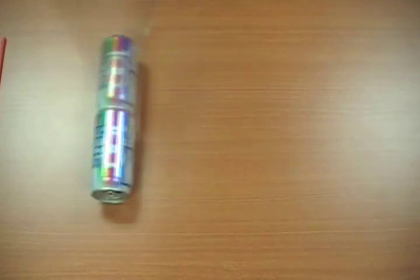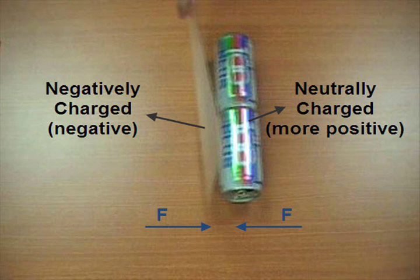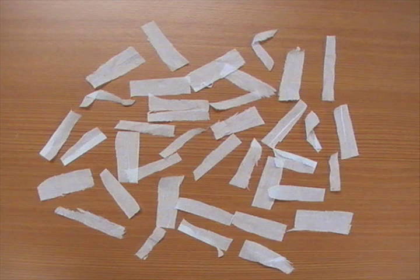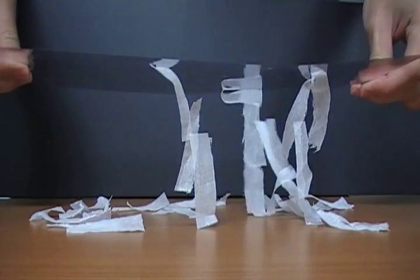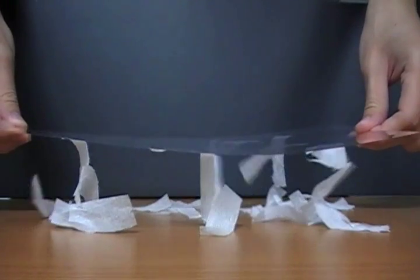This is because the empty can is neutrally charged, and thus it is more positive than the negatively charged sheet of plastic. So when they are brought close to each other, they tend to move towards each other due to the electrostatic force of attraction. This is the same for strips of tissue paper. When you bring the negatively charged sheet of plastic close to the neutrally charged strips of tissue paper, the strips of tissue paper will get attracted to the plastic.